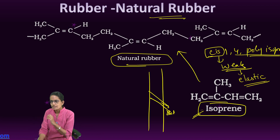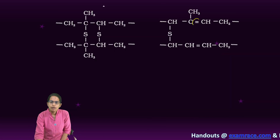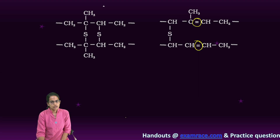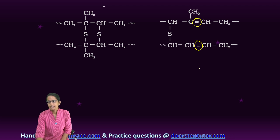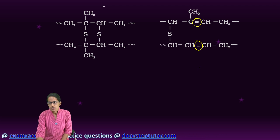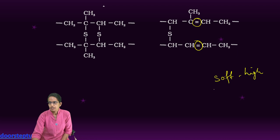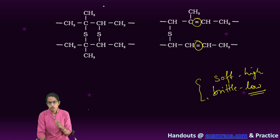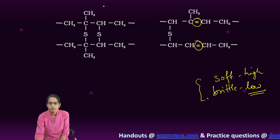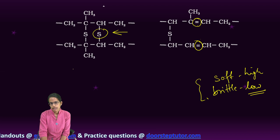There are various cross-links that are to be established with this. When there are double bonds, that means there is unsaturation. So vulcanization of rubber is done. Under vulcanization, natural rubber becomes very soft when the temperature is high and becomes brittle if the temperature is low. In order to improve its strength, the double bonds are removed and sulfur is reacted with it.